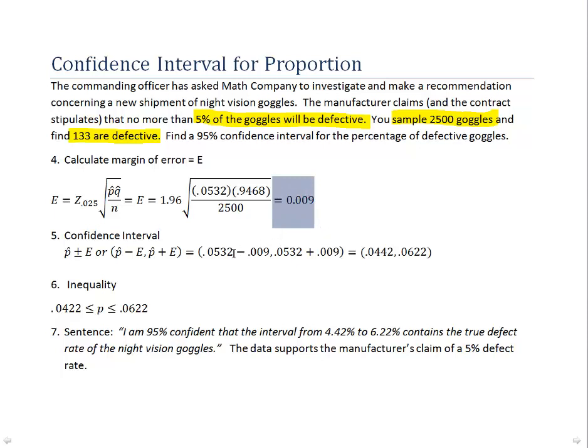We can use that then to create our confidence interval: P hat plus or minus E. Or substituting in, that would be 0.0532, that was our P hat, plus or minus 0.009. And we end up with our 95% confidence interval of 0.0442 to 0.0622. Now to express that as an inequality we'd write it this way. That just reminds us that what we're studying is P, a proportion or percent of goggles that are defective.